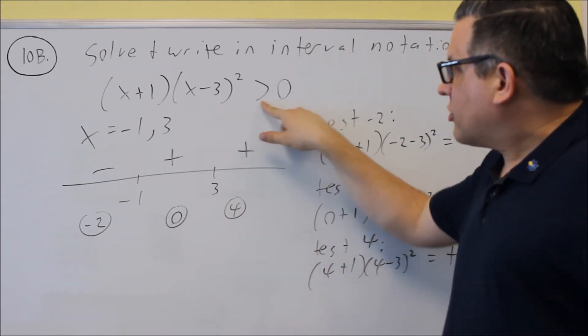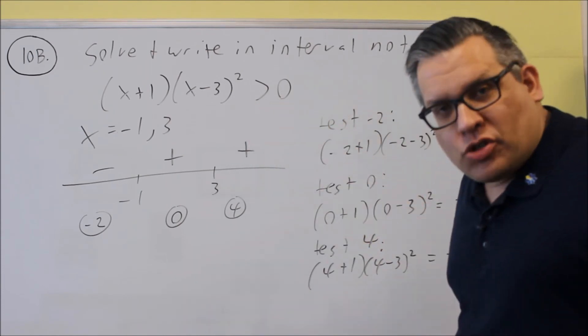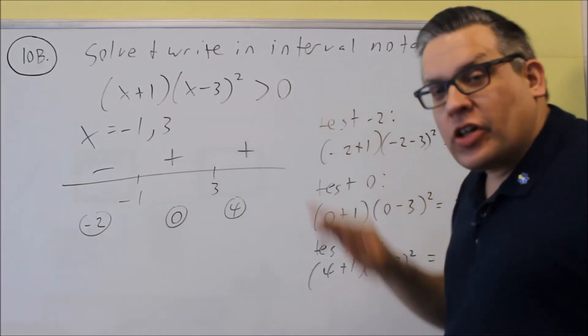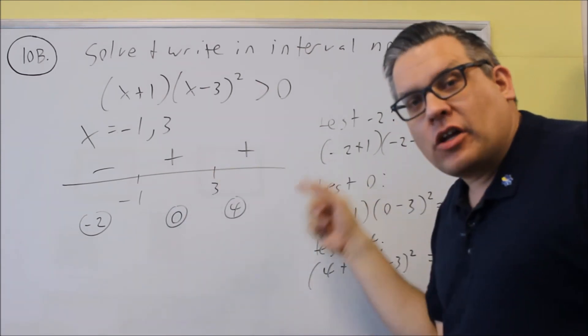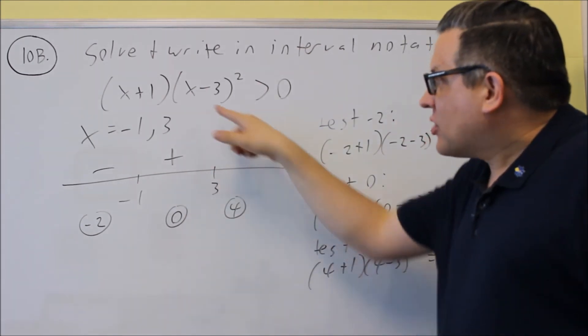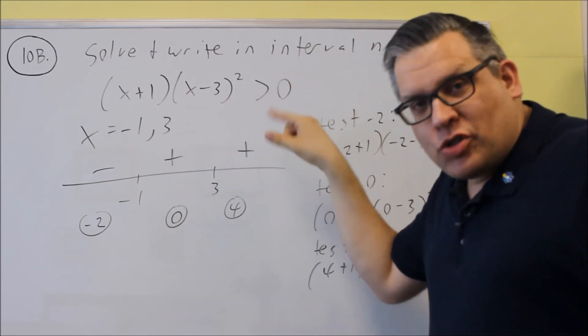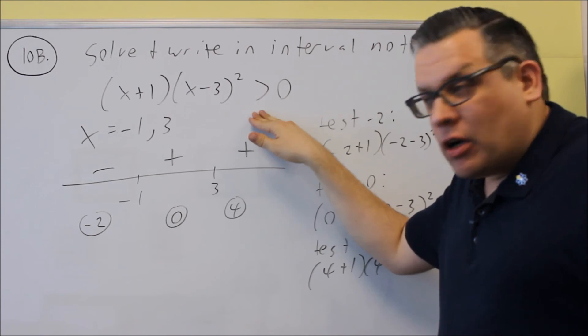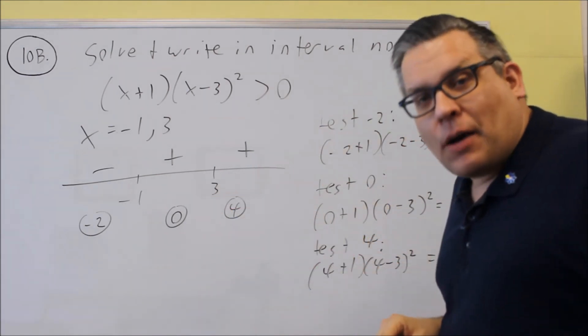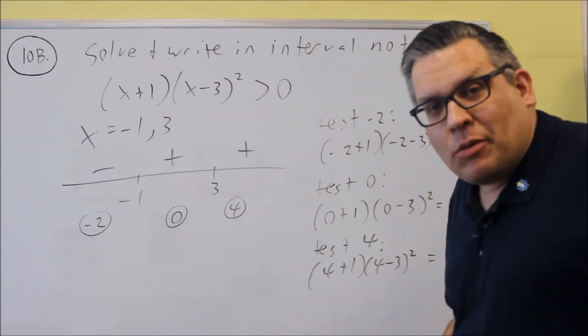What if it was greater than or equal to zero? Well, if it was greater than or equal to zero, then I could include, have that as one interval from negative one to infinity, because then I would have zero is greater than or equal to zero, which would be a true statement. But because I got a greater than here, negative three cannot be included because I don't get a true statement.